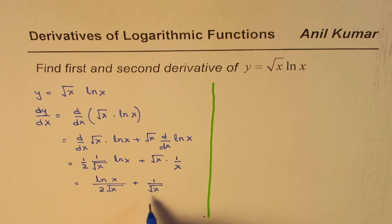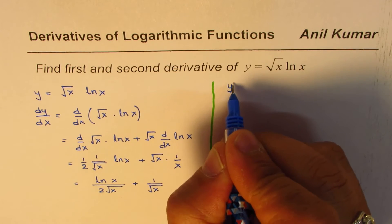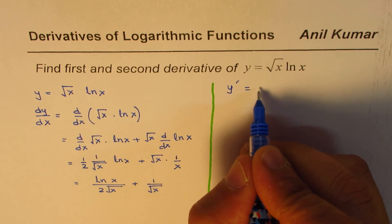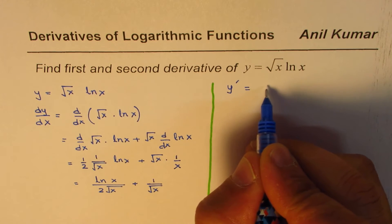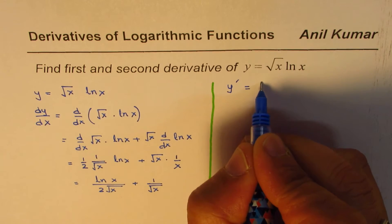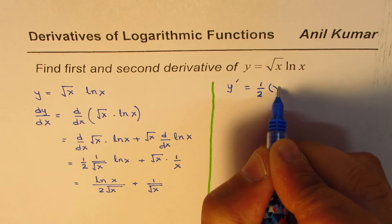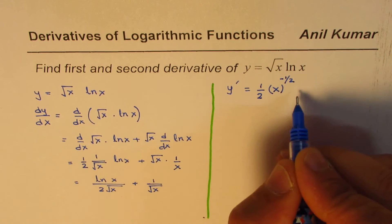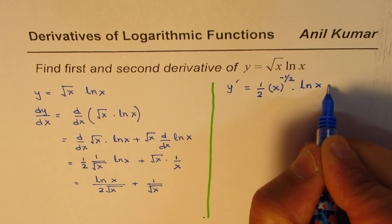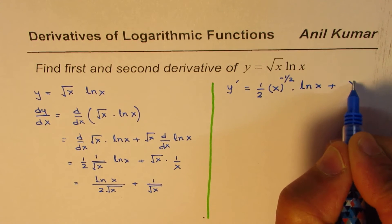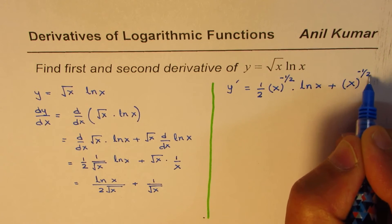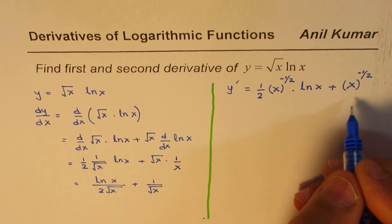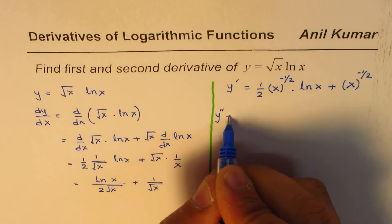Starting from the first derivative we can find the second derivative. Let's rewrite the first derivative: y prime equals one half times x to the power of minus half times ln x, plus x to the power of minus half. Writing it this way with power notation helps us use the power rule to find the next derivative.